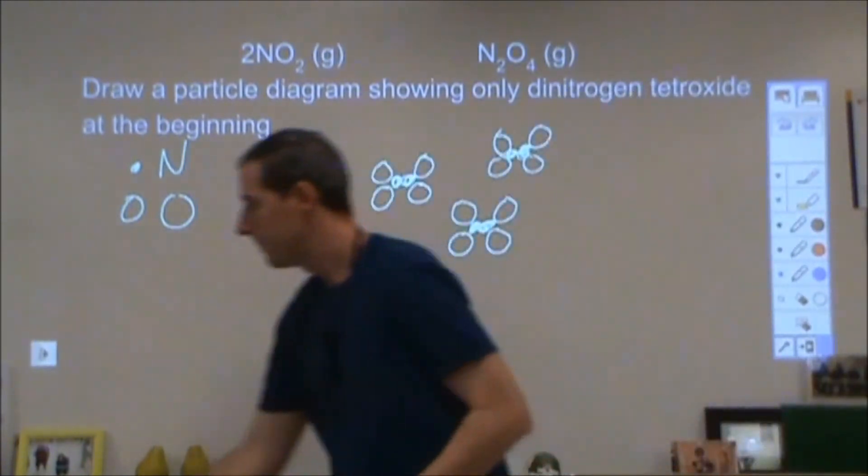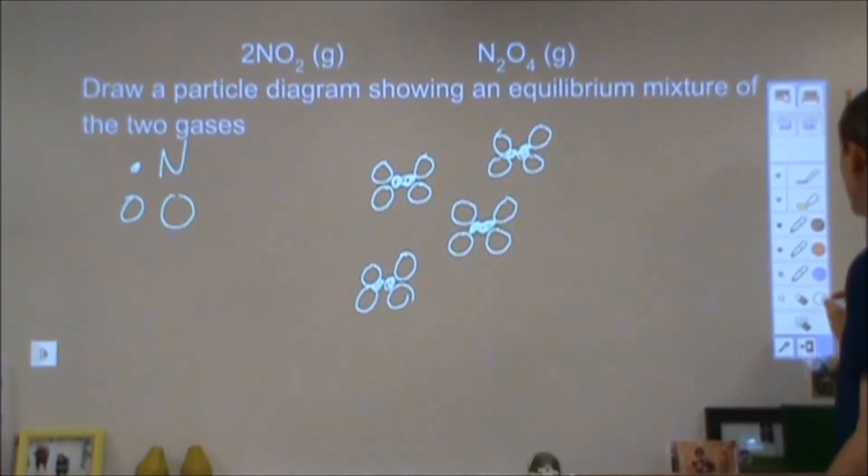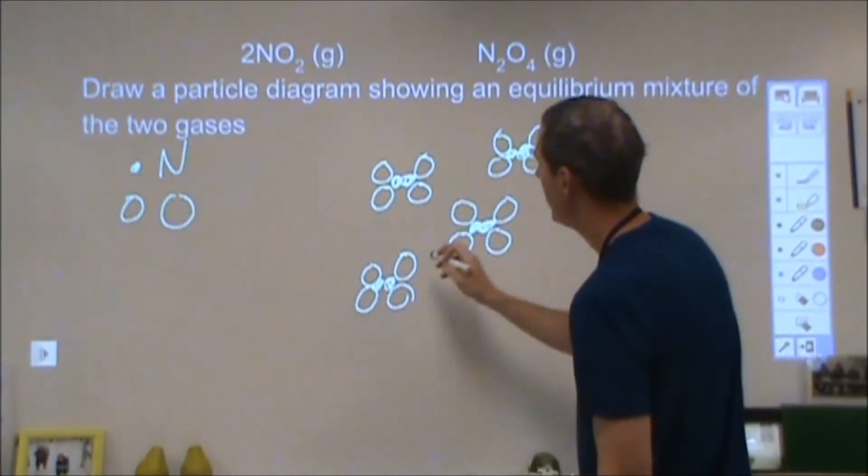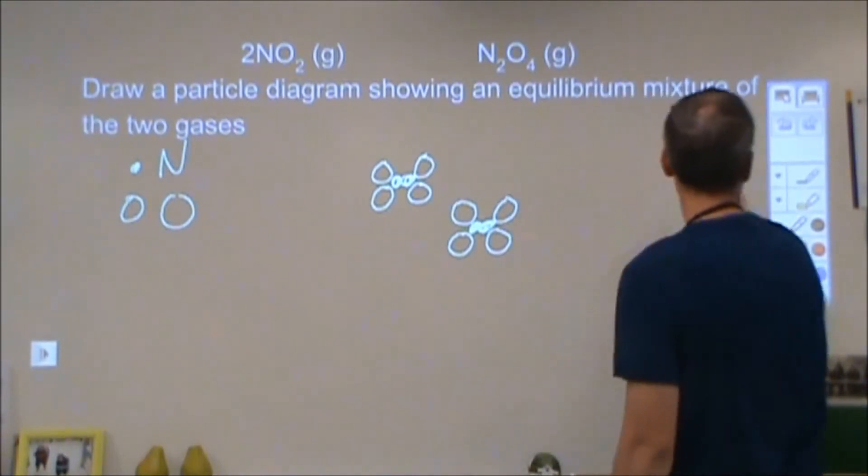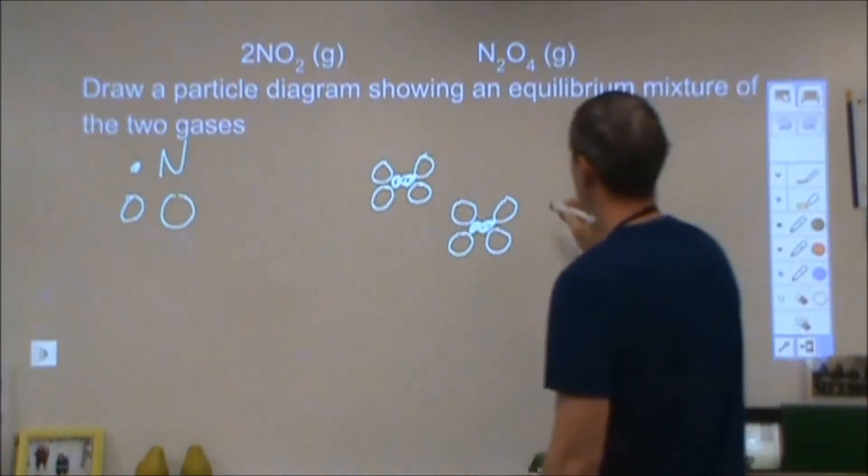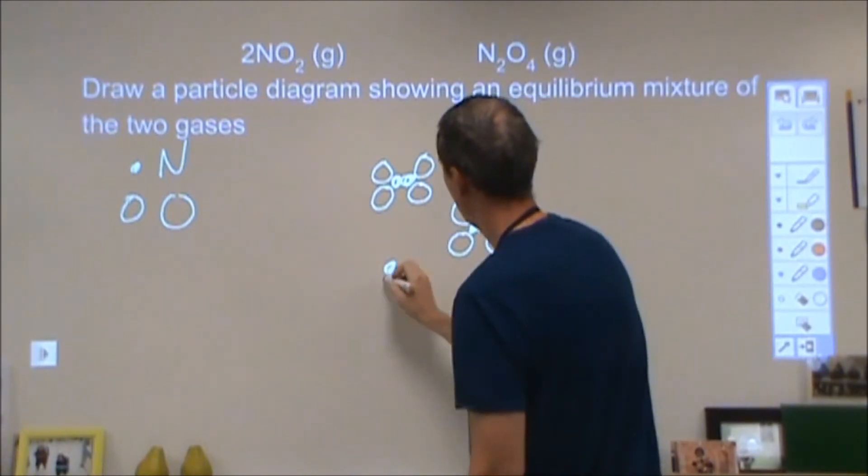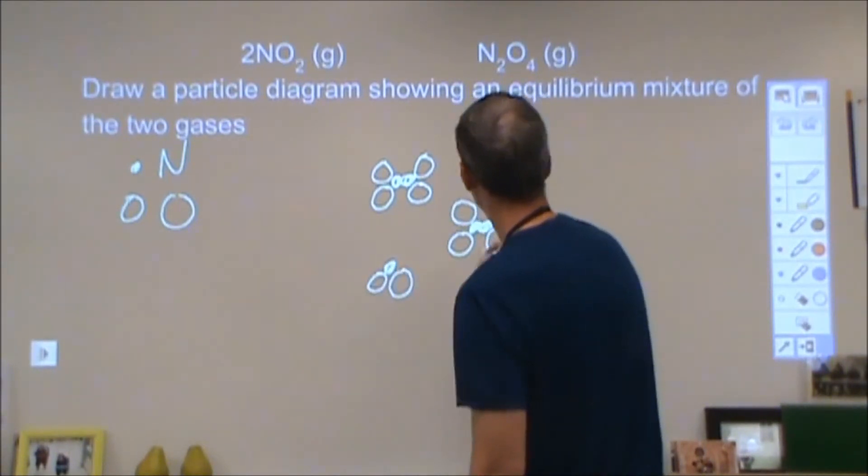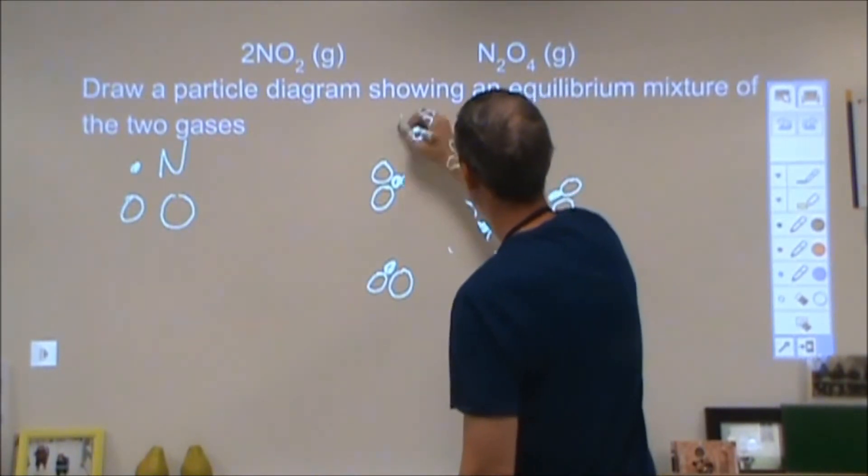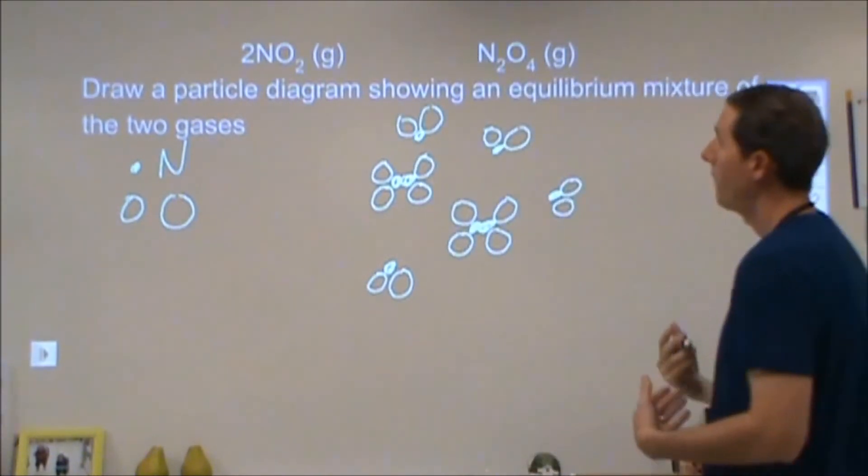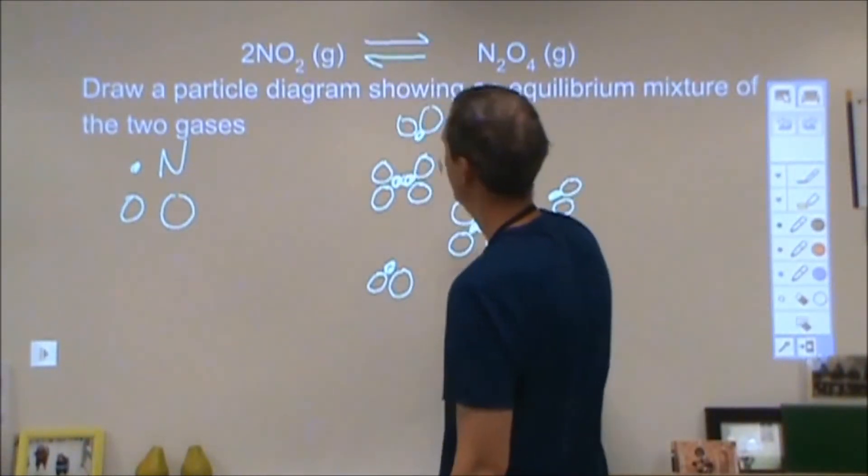In the last part, it says draw an equilibrium mixture, and that gives you some leeway. It doesn't give you any restrictions on what your equilibrium mixture is going to look like. Again, I'm going to keep my numbers consistent. I'm going to make an NO2, and an NO2, NO2, and one more NO2. So I have four NO2s and two N2O4s at my equilibrium.